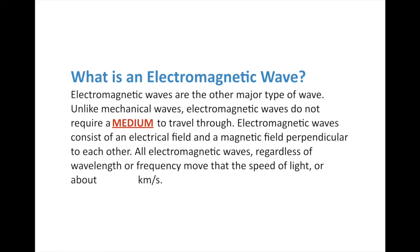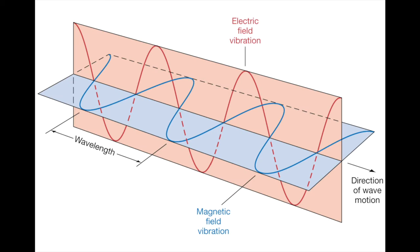The electrical and magnetic fields move in conjunction with each other. Later on we're going to be talking about electricity and magnetism and we'll see how they're related — because of electromagnetic waves. Now all electromagnetic waves, regardless of wavelength or frequency, move at the speed of light in a vacuum. They all move at the exact same speed, which is about 300,000 kilometers per second.